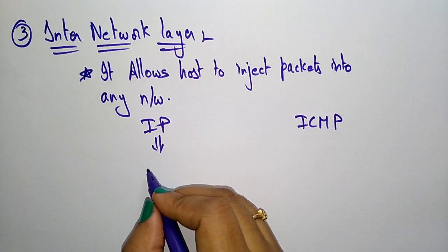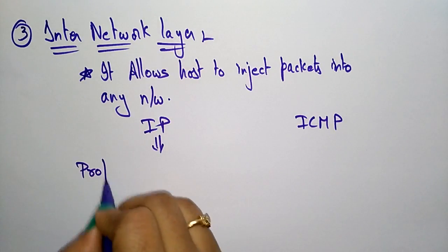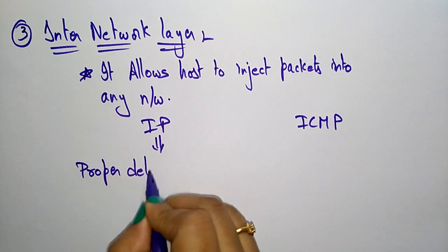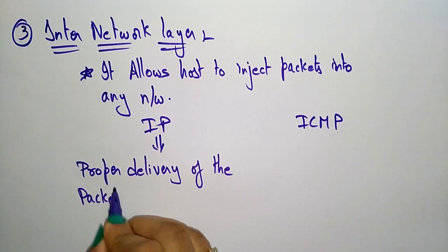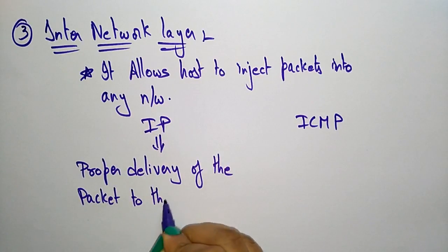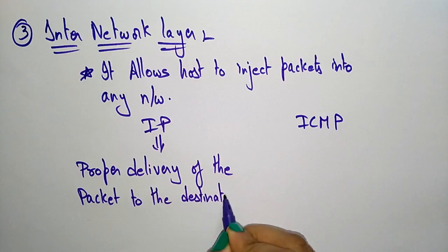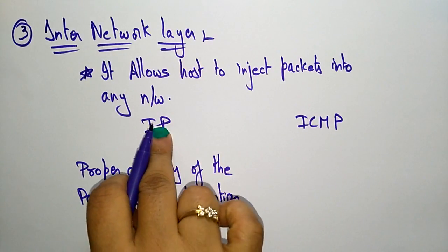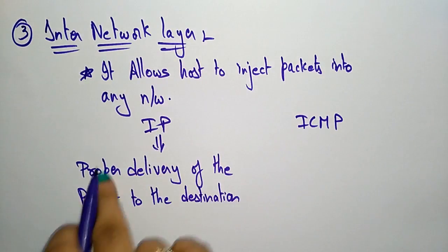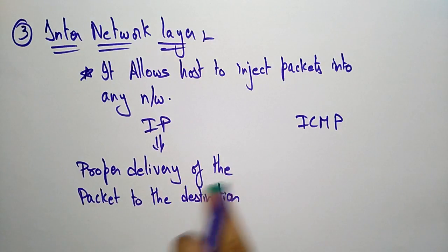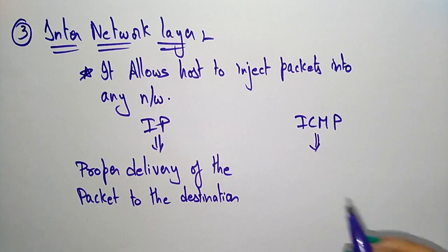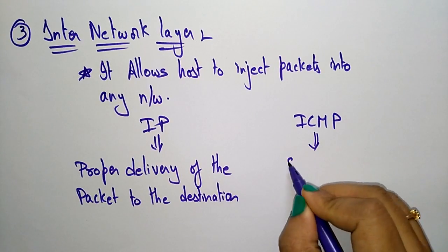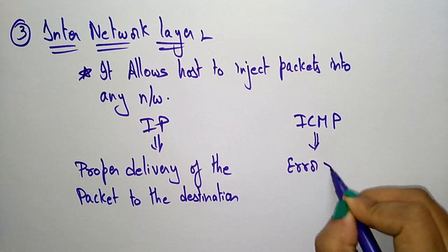IP is used for the proper delivery of packets to the destination. To reach the message from source to destination, you need the IP address at the network layer. The ICMP protocol is used for error reporting.